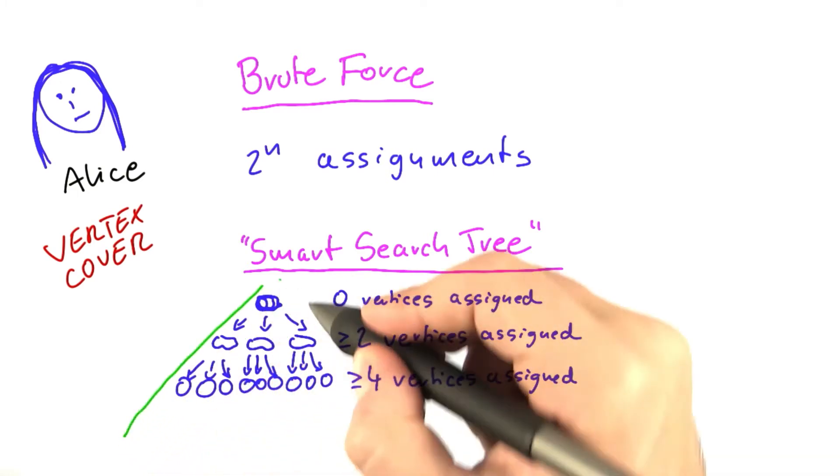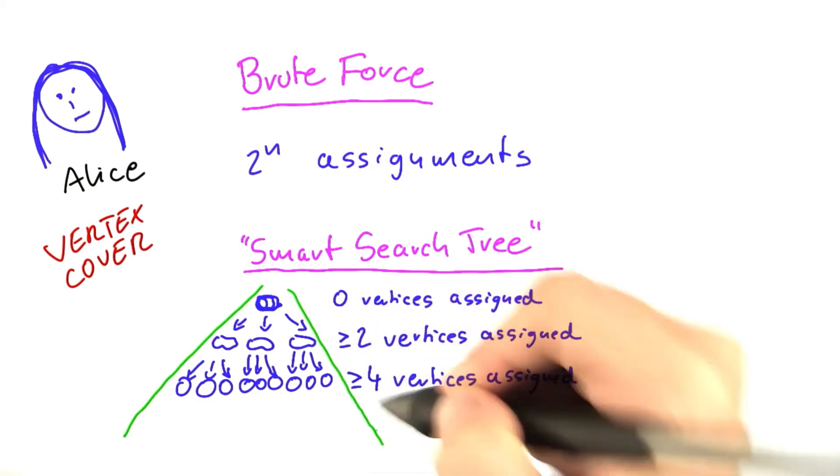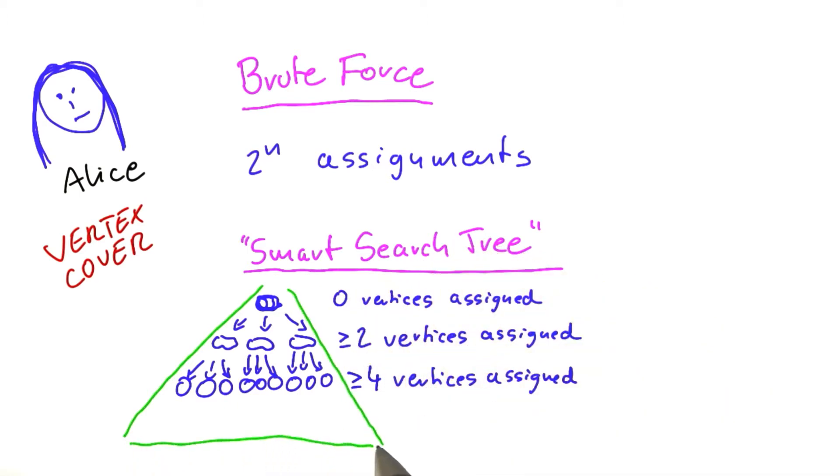So let's say we continue the search tree in this matter. So we'll always get wider and wider and wider. Then we know two things.